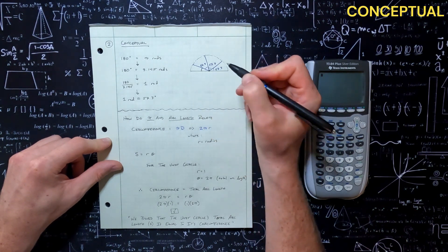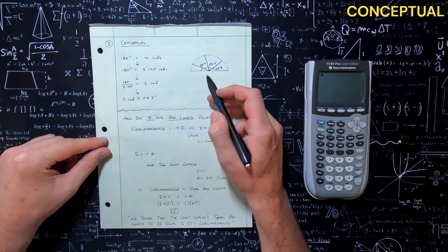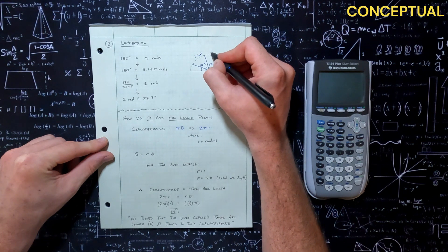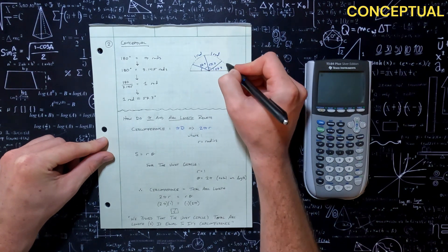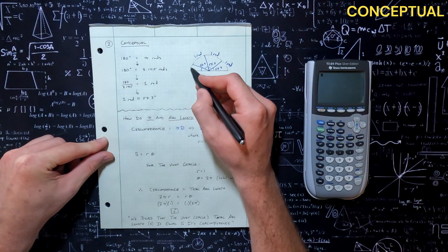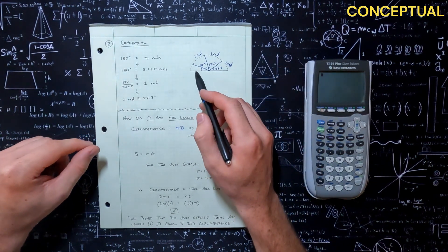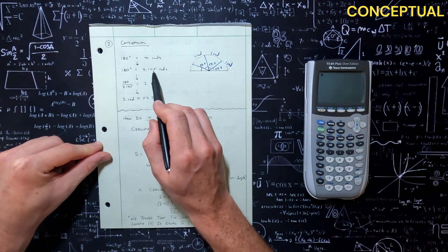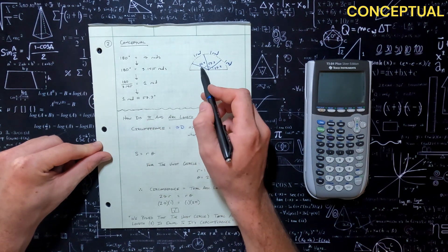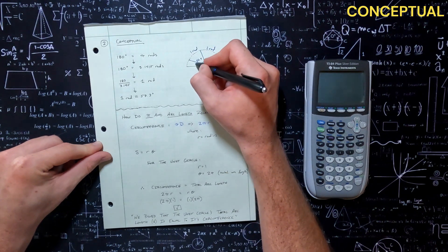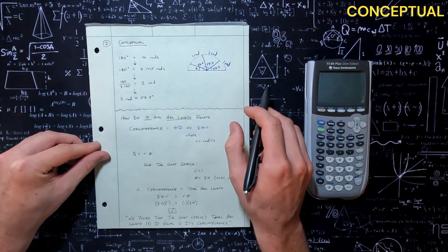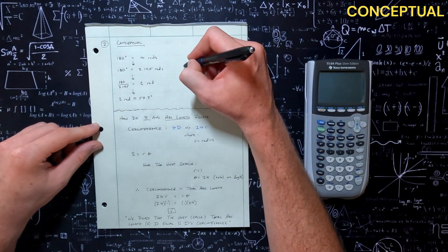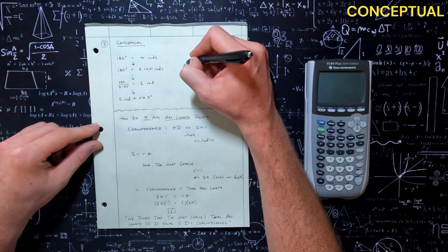So 57.3, 57.3, and 57.3 — we have three radians here, with this little chunk left over. This is one radian, this is one radian, and that's one radian. But we have this little remaining chunk over here that we should know the value of, because if we have three radians, we need an extra 0.1415.